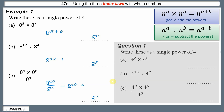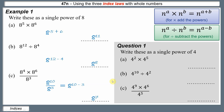Now pause the video and have a go at the practice questions, then restart for the answers. 4 squared times 4 to the 5: add the powers to get 4 to the 7. 4 to the 10 divided by 4 squared: subtract the powers to get 4 to the 8. For the combined question: first add the powers to get 4 to the 15, then divide by 4 to the 5, subtract to get 4 to the 10.